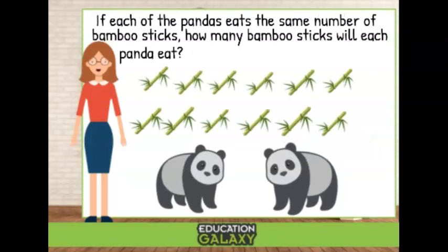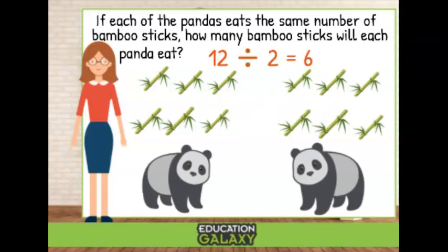If each of the pandas eats the same number of bamboo sticks, how many bamboo sticks will each panda eat? Well, since there are 12 sticks of bamboo and two pandas, that would be 12 divided by 2. What answer do you get? That's right, six, since each panda gets six bamboo sticks.